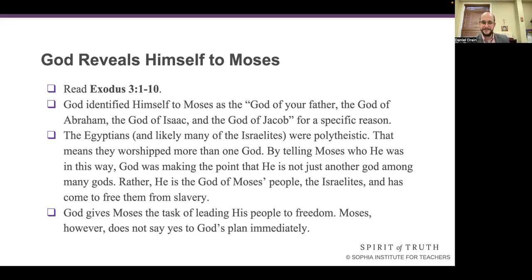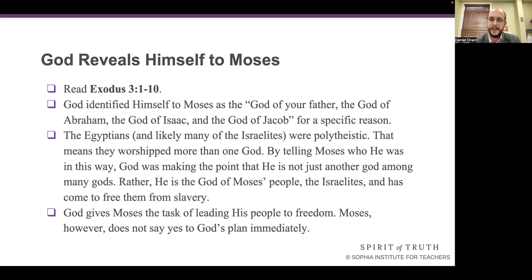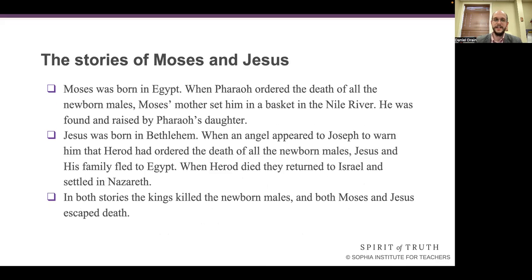Here, God identified himself to Moses as 'the God of your father, the God of Abraham, the God of Isaac, and the God of Jacob' for a specific reason. Because there are a lot of gods around — the Egyptians, and likely many of the Israelites, were polytheistic: Ra, Hapi, Anubis, Osiris. By telling Moses who he was in this way, God was making the point that he is not just another god among many gods. Rather, he is the God of Moses' people, the Israelites, and he's come to free them from slavery. God gives Moses the task of leading his people to freedom. Moses, however, does not say yes to God's plan immediately.